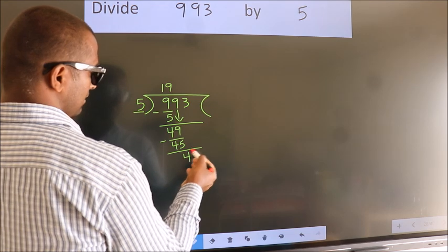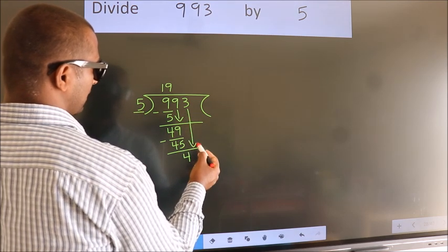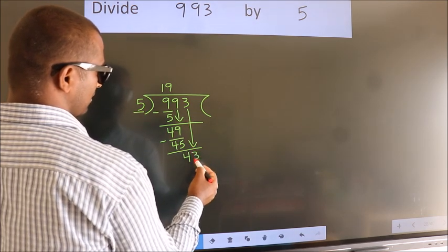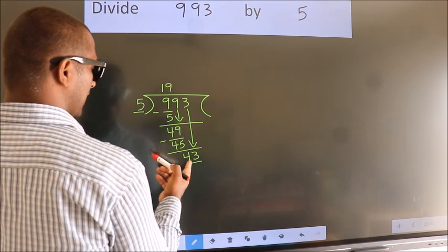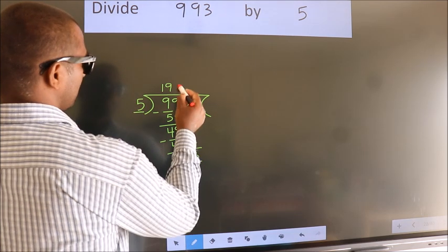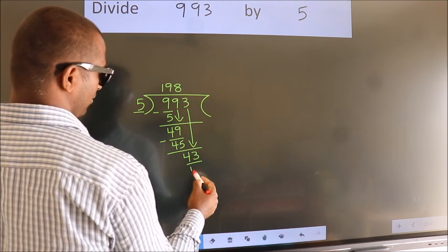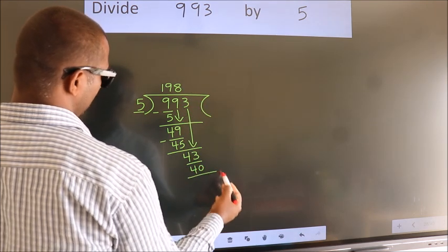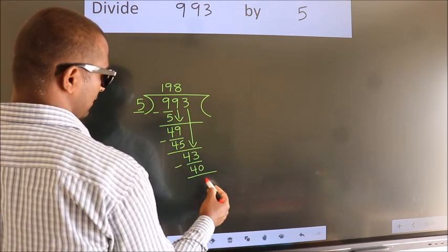After this, bring down the next number. So 3 down, so 43. A number close to 43 in the 5 table is 5 eights 40. Now we subtract. We get 3.